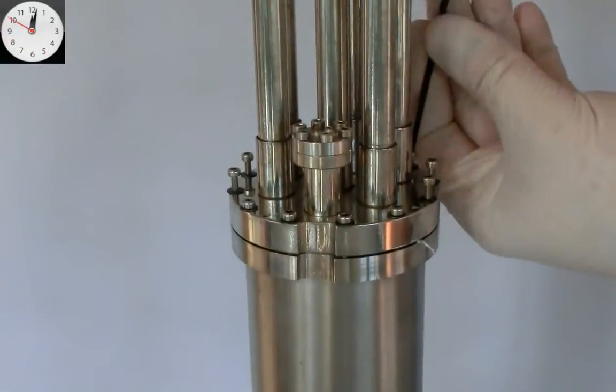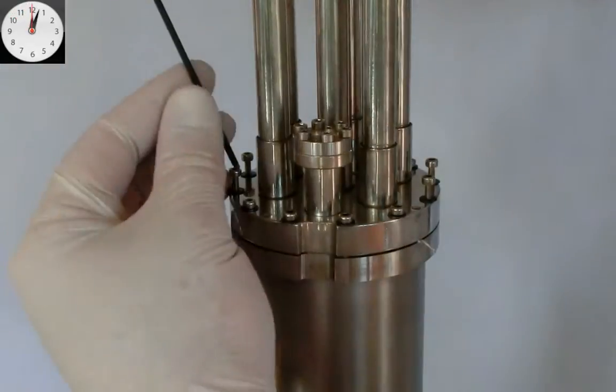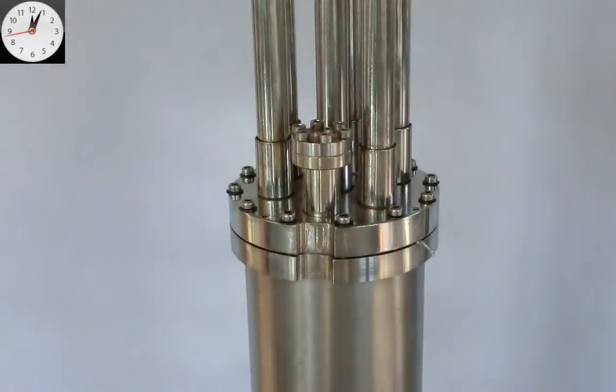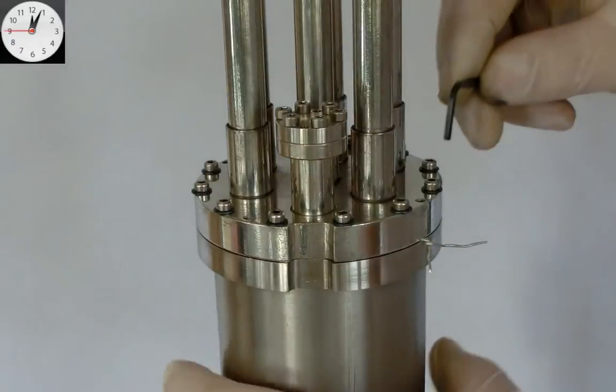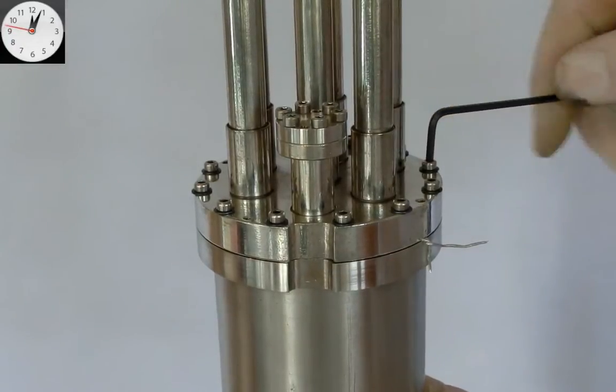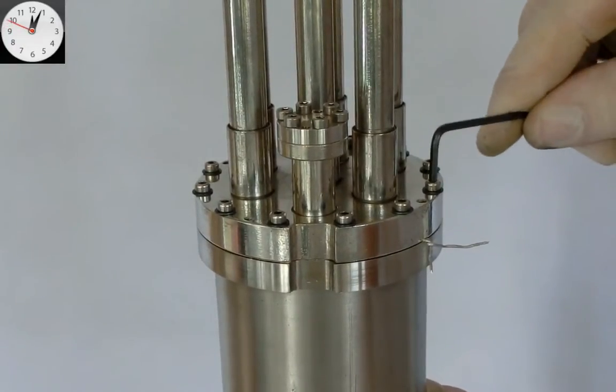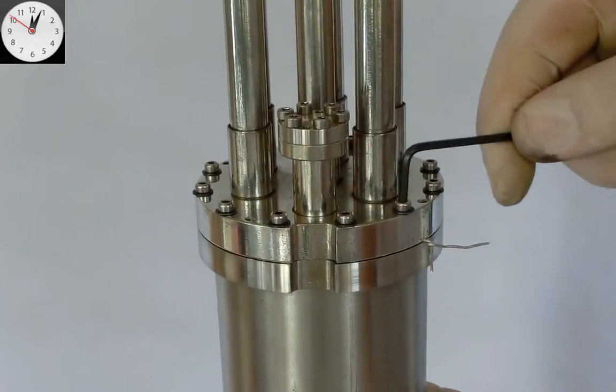Keep tightening the bolts in opposition until one-eighth turn of deformation cannot be felt. For the final circuit, go around the flange in order, tightening the bolts by about one-sixteenth of a turn until no further deformation can be felt.